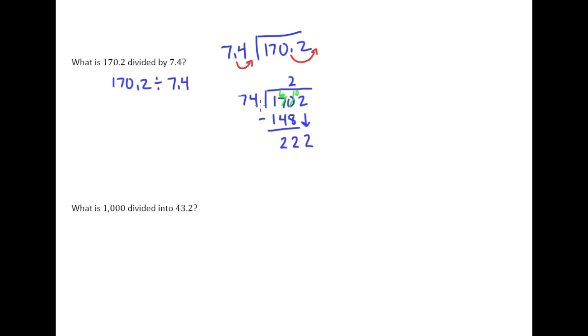And, well, 74 is one less than 75, so maybe it will fit in 3 times. So let's see. 3 times 4 is 12. 3 times 7 plus 1 is 22. So our answer is 23.